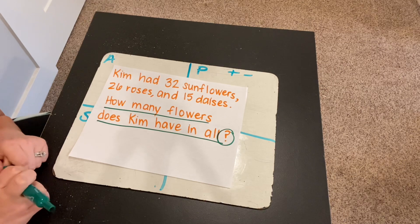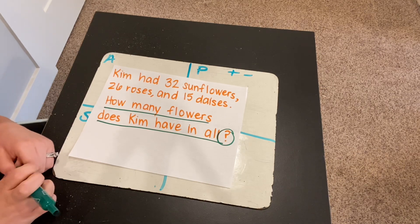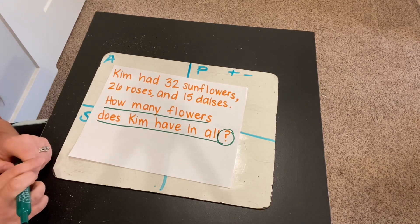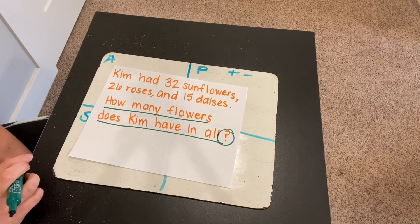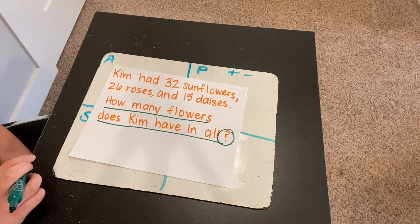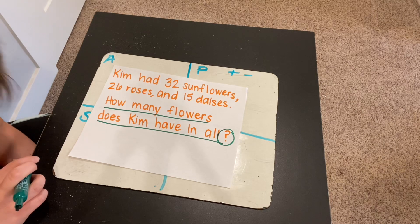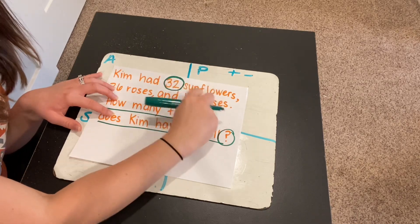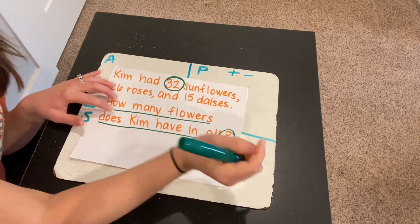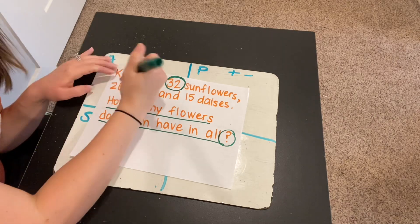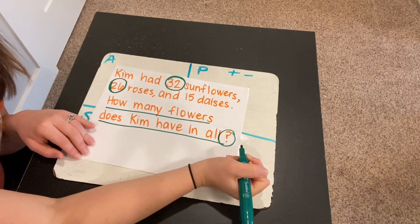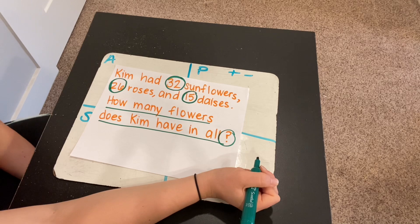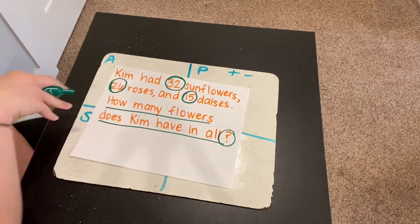Okay, so now let's go back through the word problem and listen for important information that's going to help us to figure out how many flowers Kim has in all. All right, here's the first sentence. Kim had 32 sunflowers, 26 roses, and 15 daisies. There was a lot of important information in that first sentence. Kim had 32 sunflowers. Sunflowers are a type of flower. 26 roses, roses are flowers. She had 26, and 15 daisies. Daisies are also flowers. How many flowers does Kim have in all? Okay, so we have what we need now.